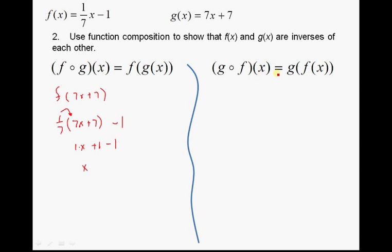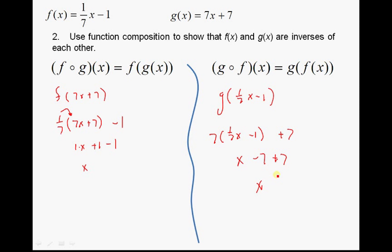Now let's verify the other direction: g composed with f of x, written g(f(x)). We substitute f(x) = (1/7)x - 1 into g wherever we see x. That gives 7×((1/7)x - 1) + 7. Distributing: 7×(1/7)x = x, and 7×(-1) = -7, so we get x - 7 + 7 = x. This also equals x, confirming that f and g are inverses of each other since both compositions equal x.